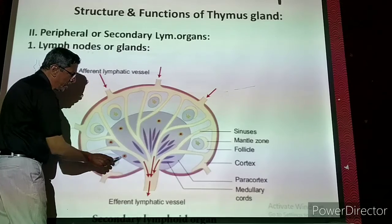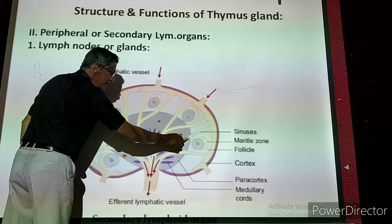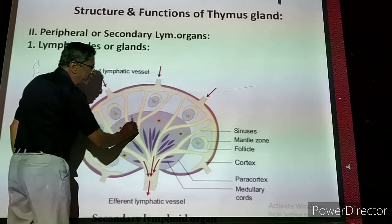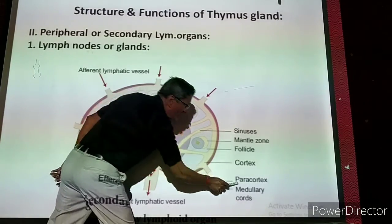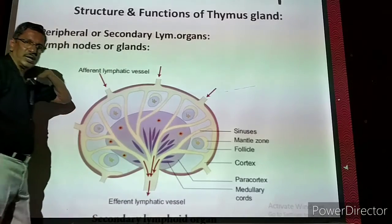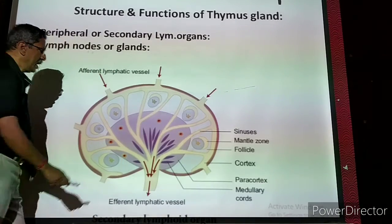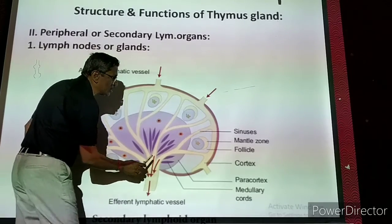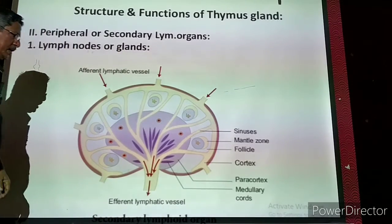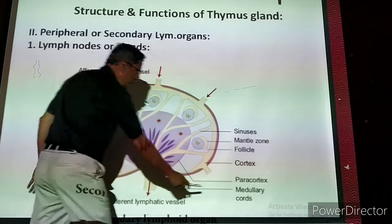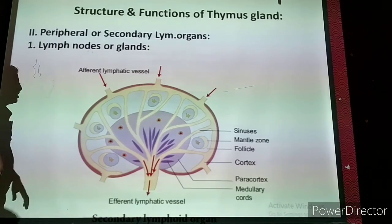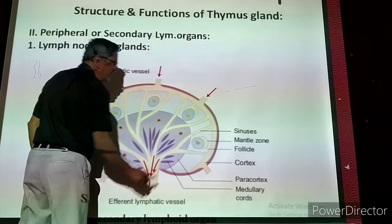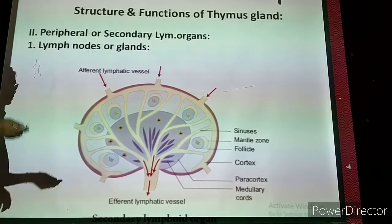The wide dark region present near the center is called the paracortex. Near the center bottom, one small region is called the medulla — also called the medullary region. So three regions are present: cortex, paracortex, and medulla.